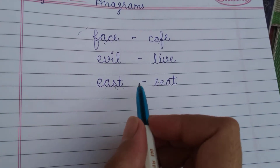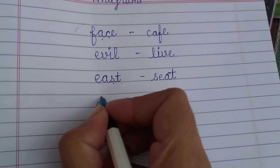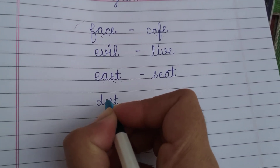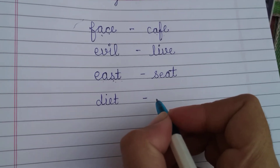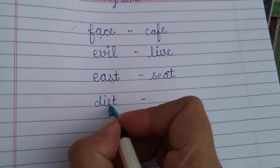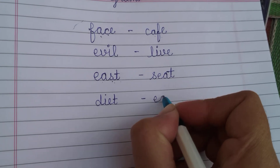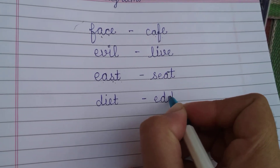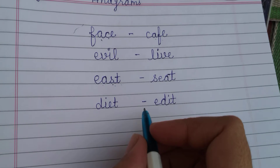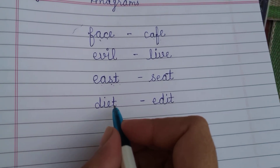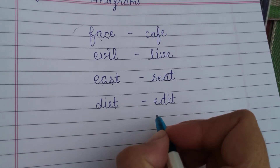We can also make more than one word from the same letters. Look at this — D-I-E-T: diet. Rearranging gives E-D-I-T: edit.